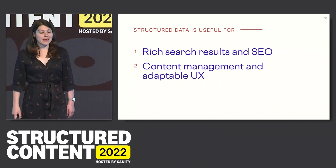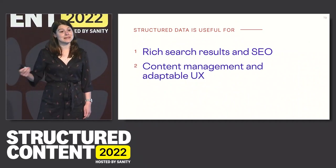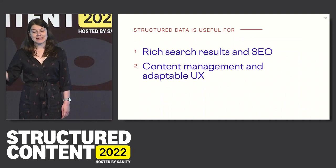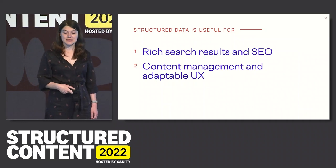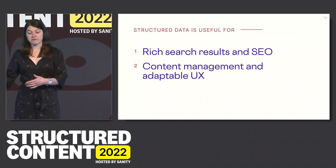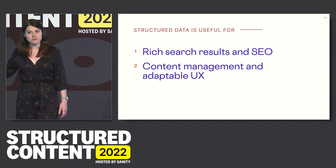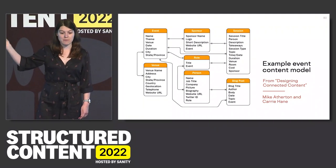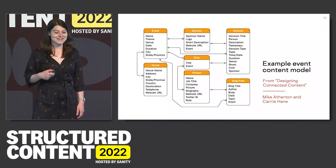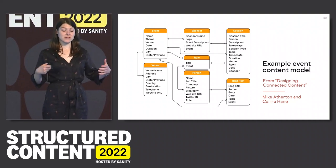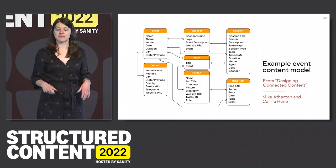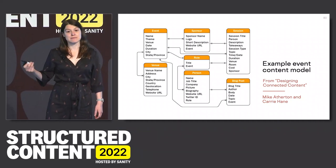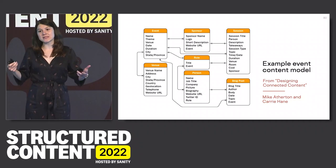Second, structured data can give us really great content management and adaptable UX. This is what everyone at this conference is probably going to be talking about the most. It makes it easier to manage content within companies and allows us to adapt and reuse content in many contexts. Tools like Sanity are a great example. This is an example of an event content model from Mike and Carrie's book Designing Connected Content. It shows a really clear mental model that allows users to reuse content in a whole variety of UI implementations, contexts, devices, and mediums.